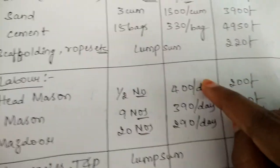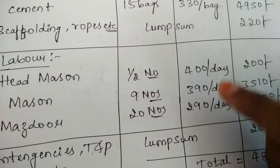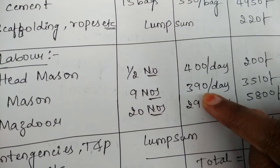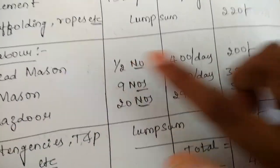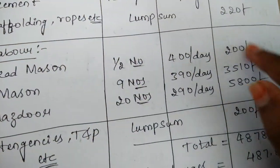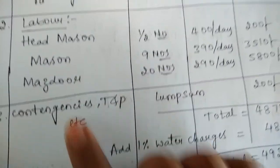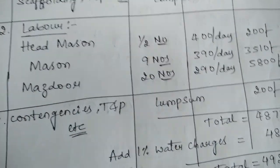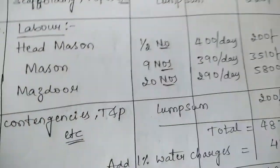The rates fixed for those laborers are 400 rupees per day for head mason, 390 rupees per day for mason, and 290 rupees per day for mazdoor. On multiplying these two columns we get all the labor amounts. For contingency and transportation charges, we assume a lump sum amount of 200 rupees.